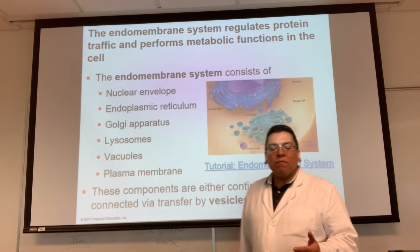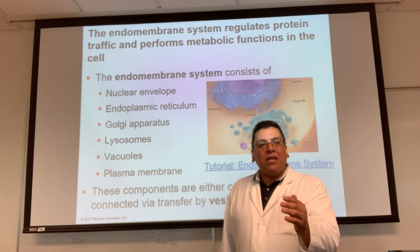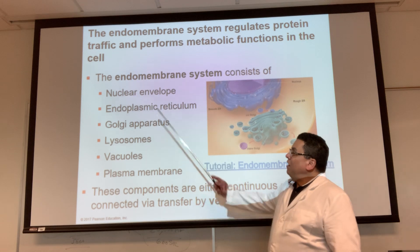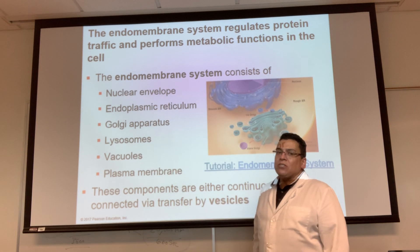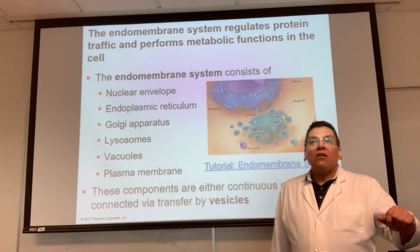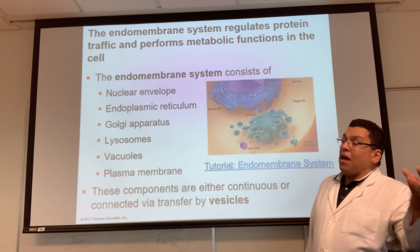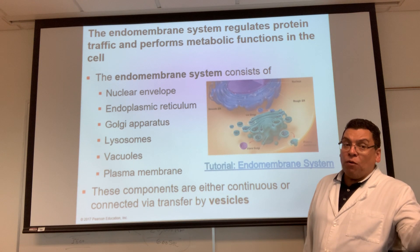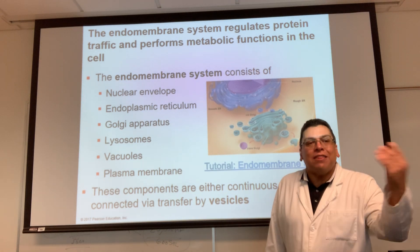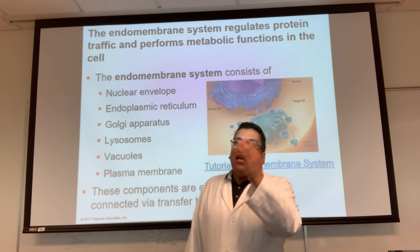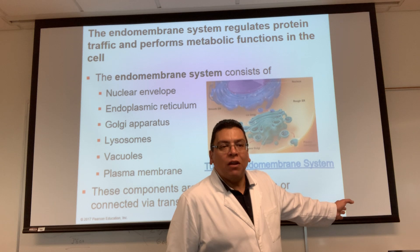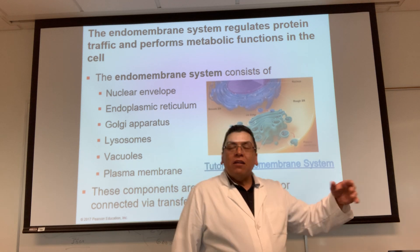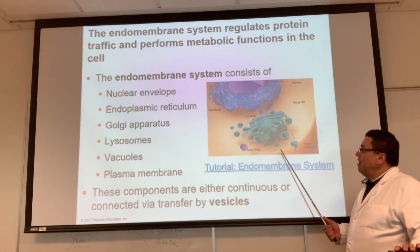If we're making a secreted protein, all of the endomembrane system components are involved except for lysosomes — and that's a nice question on the exam. So if we're making insulin, the nuclear envelope, the endoplasmic reticulum, the Golgi apparatus, the vesicles and transport vehicles, and the plasma membrane are all involved. Why? Because the protein has to leave the cell — just like you need to open the door to leave a room.